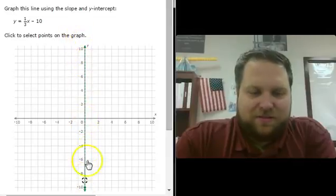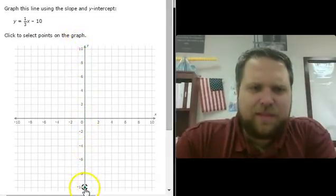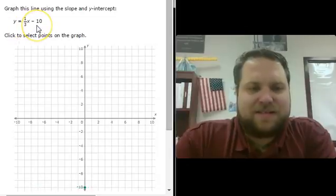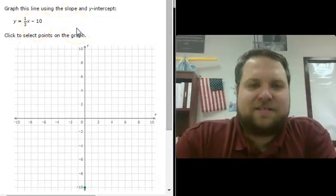The y-intercept is where it crosses the y-axis. Here, since the y-intercept is negative 10, it will cross the y-axis at negative 10.